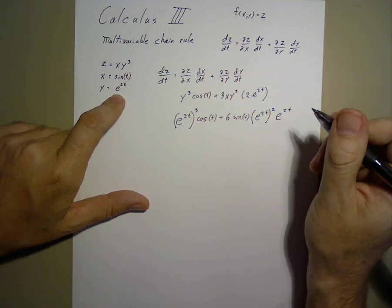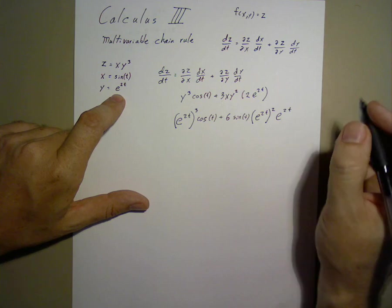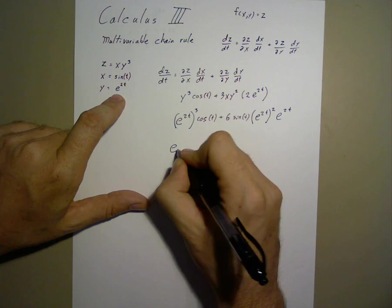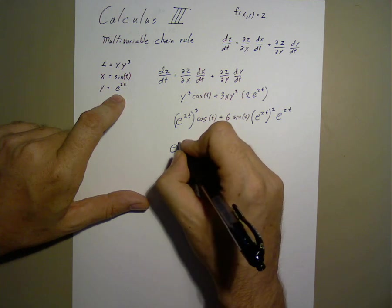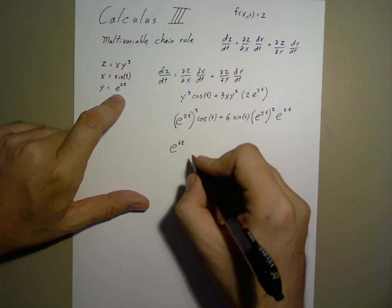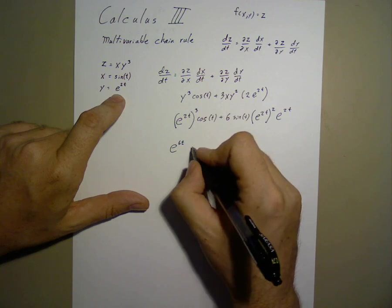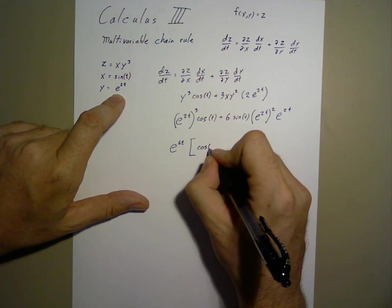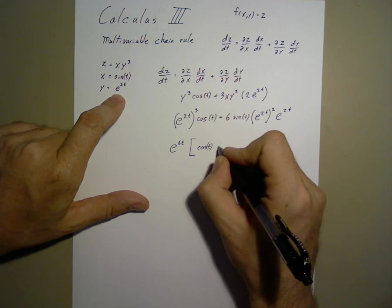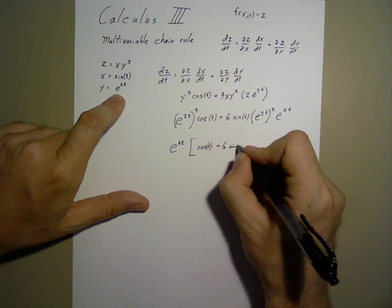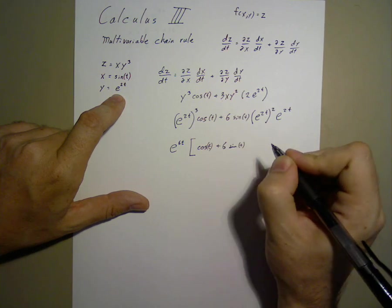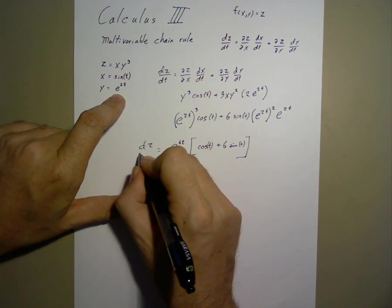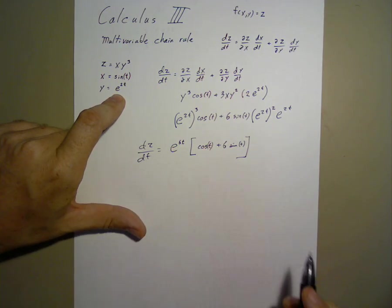Now, this function could use quite a bit of simplification. In particular, we can write e to the 6t bracket cosine t plus 6 sine t. That is the time derivative of z.